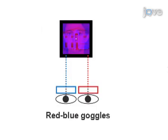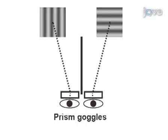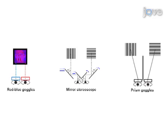To create a binocular rivalry stimulus, each eye is presented with a different image at the same perceived location. This video describes several inexpensive and straightforward ways to create and use binocular rivalry.